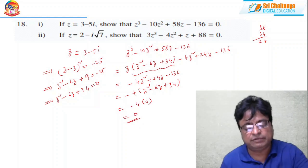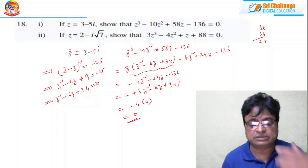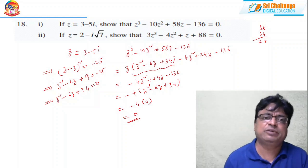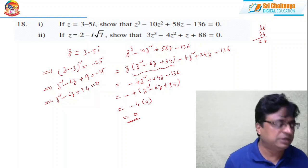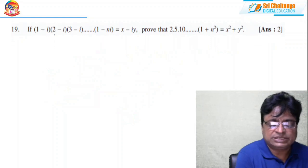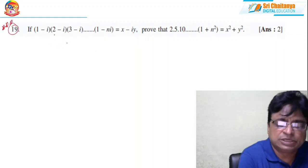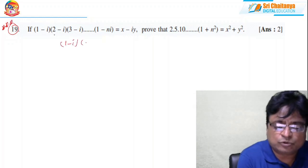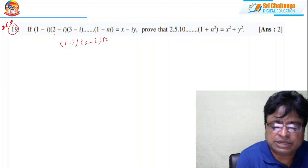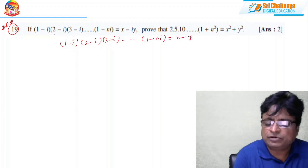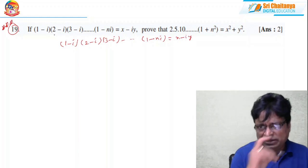The same technique can be applied to quadratic and polynomial equations. Coming to question 19, this is an important problem very useful for all competitive examinations. It states: (1 − i)(2 − i)(3 − i)···(1 − ni) = x − iy. Find or prove x² + y².